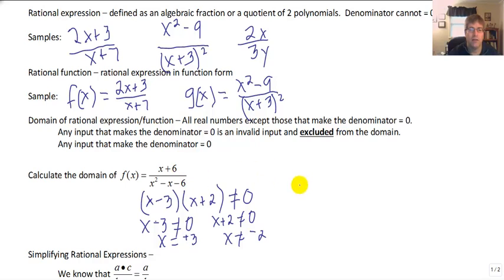So our answer, calculate the domain then, is all real numbers except 3 and negative 2. So we would leave those two out. Everything else is a valid input.